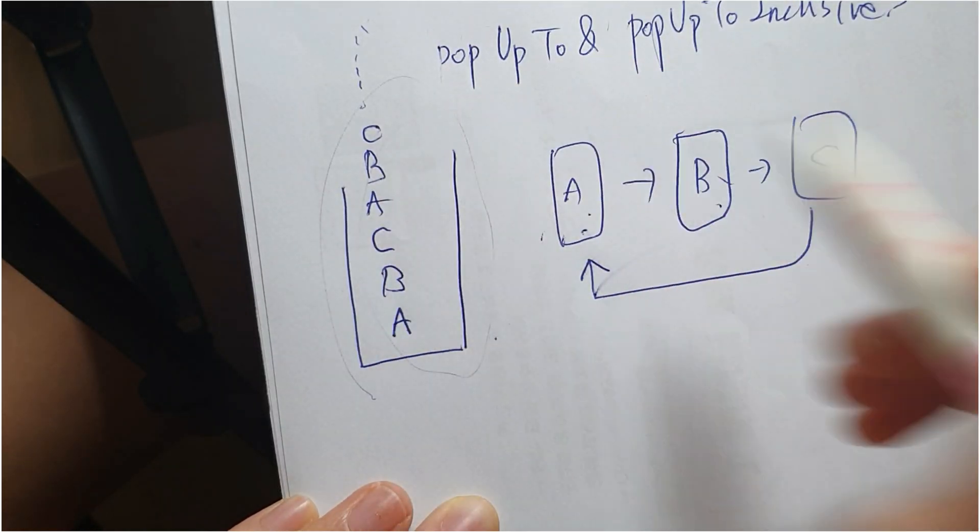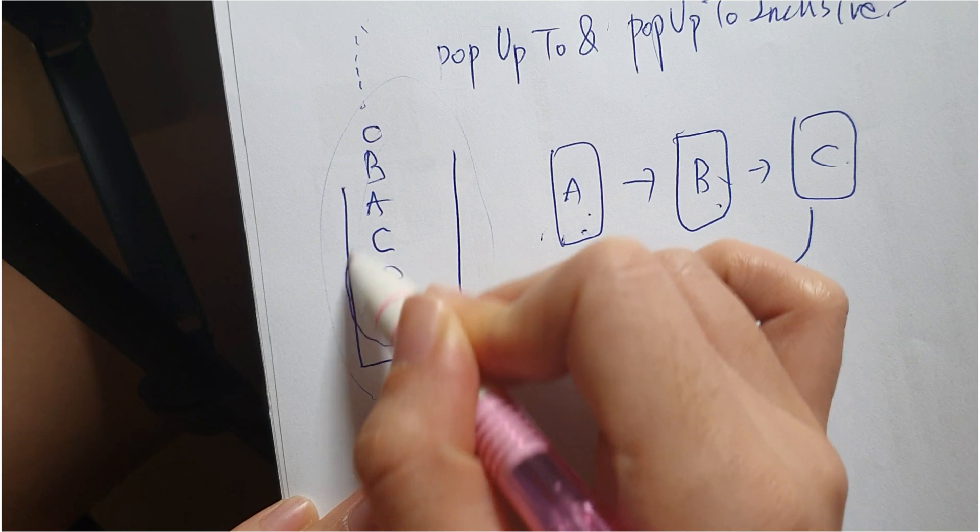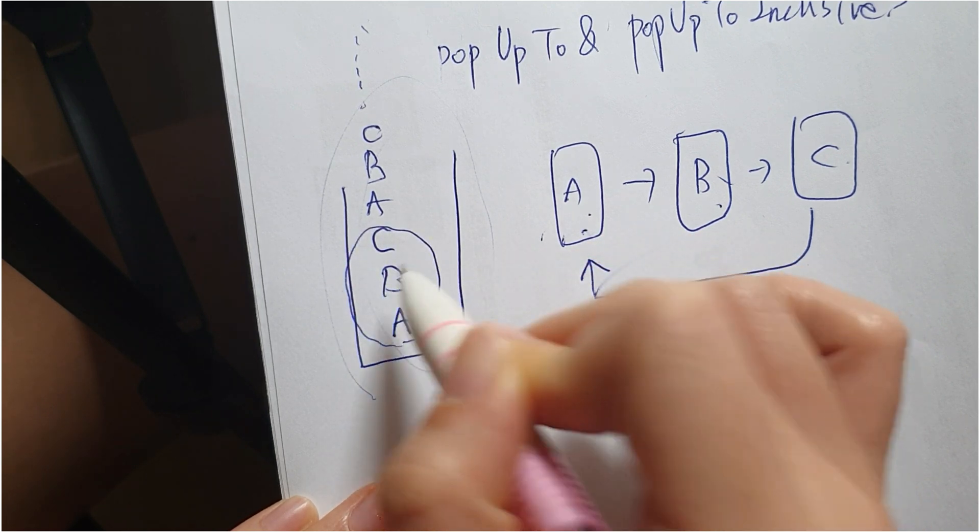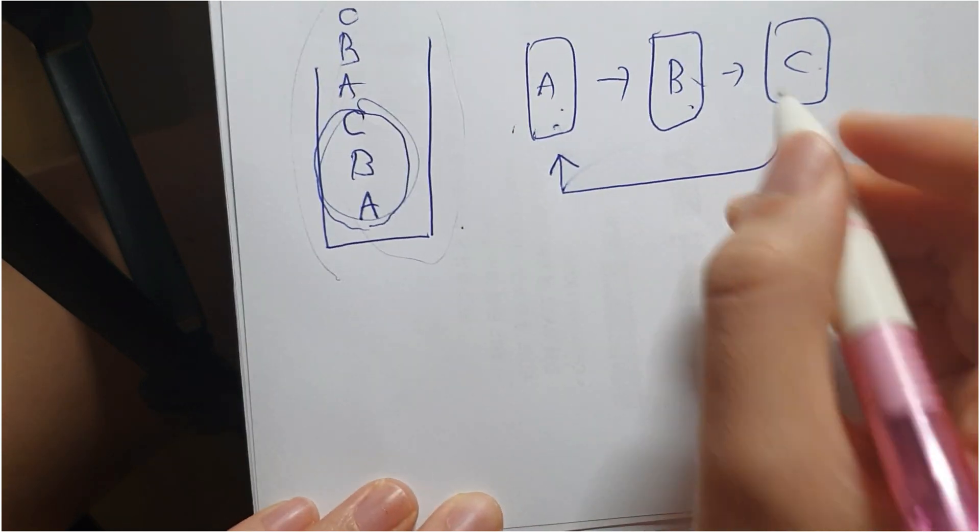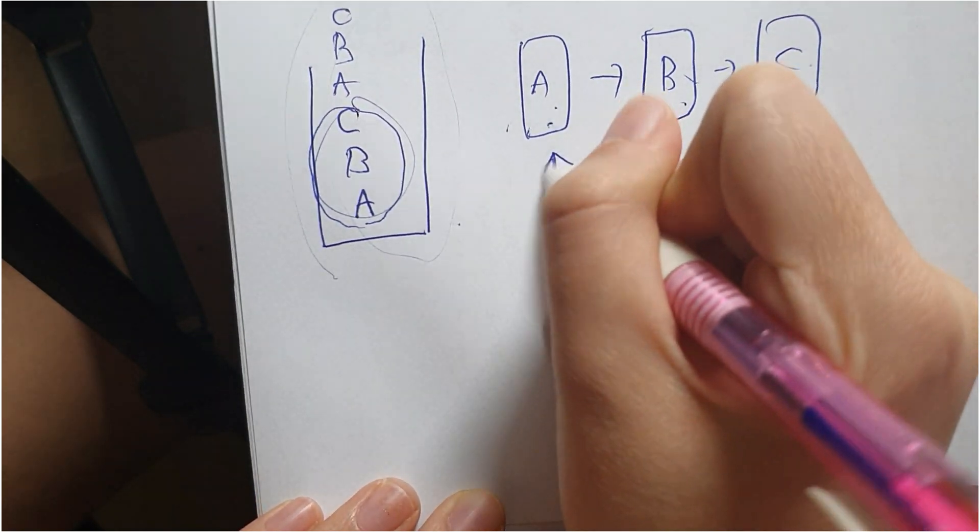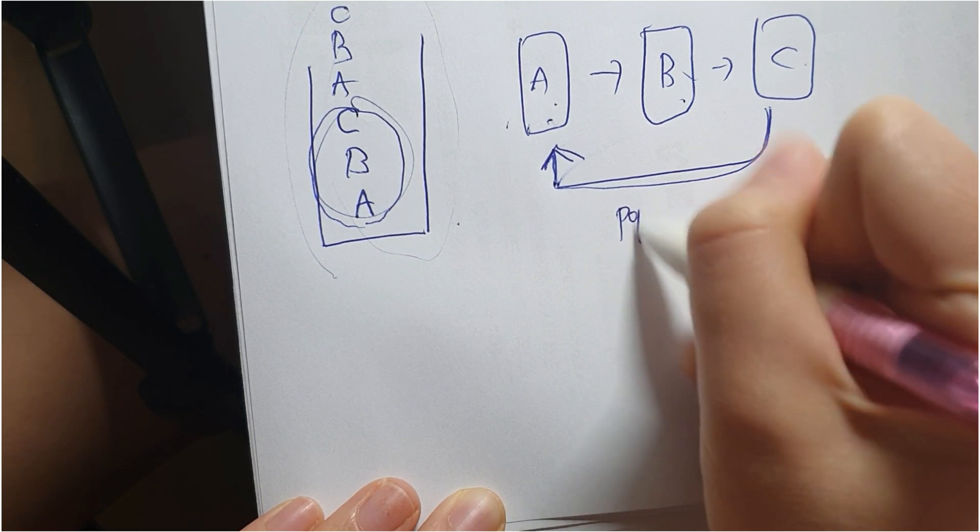But actually, this is really inefficient. So what I want is I just want to keep A, B, C - like just three of them. So for that, we're going to add attributes to the action C to A: pop up to A.